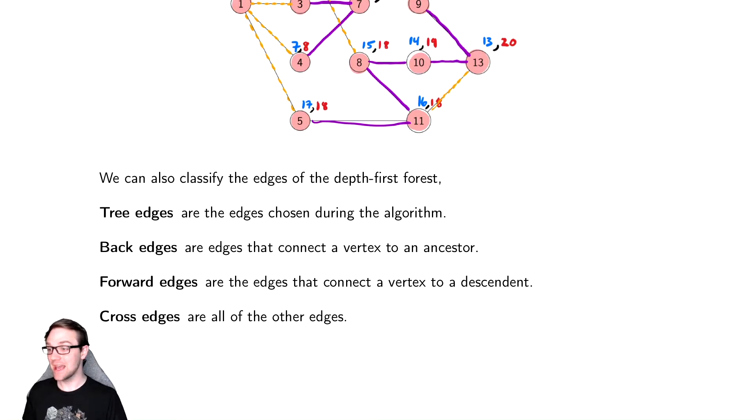Those are easy back edges that connect to an ancestor. These will be edges which connect to a vertex that is currently gray. So these are from one vertex to a gray vertex are these back edges.